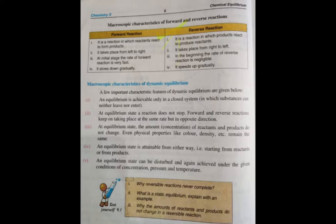Now we are going to start our topic: the macroscopic properties of dynamic equilibrium. The first property is that equilibrium is established in a closed system. A closed system means the flask or container is closed with a cork or stopper, so the reactants and products remain in the same container.